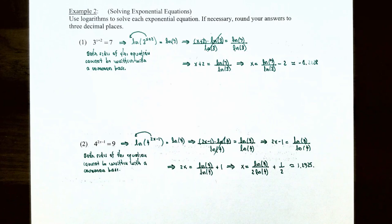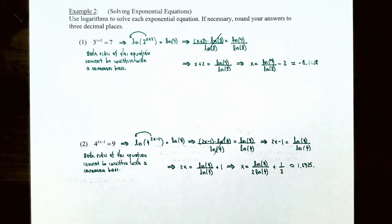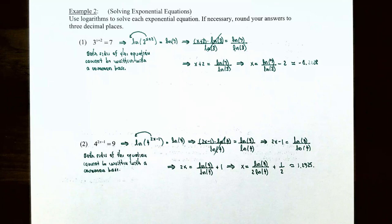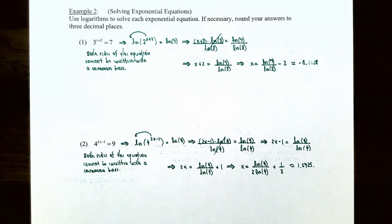Example two, using logarithms to solve exponential equations. Round answers to three decimal places if necessary. Number one: three raised to the exponent x plus two equals seven. There is no common base between three and seven, so we use the algebraic technique. The exponential expression is already isolated. Take the natural log of both sides: ln(3^(x+2)) equals ln(7). Using the power law, bring down the exponent: (x plus two) times ln(3) equals ln(7).